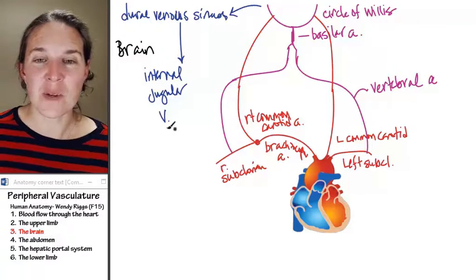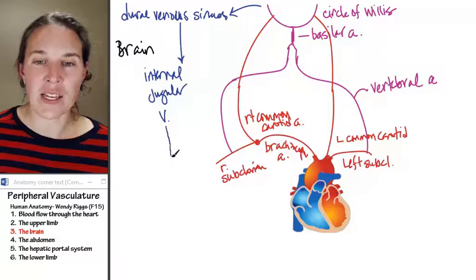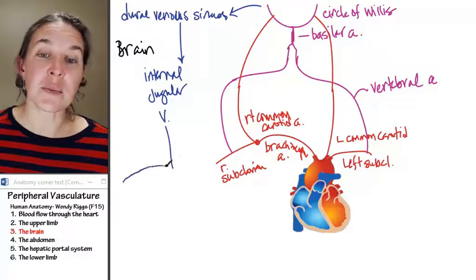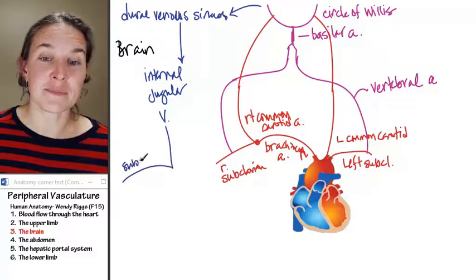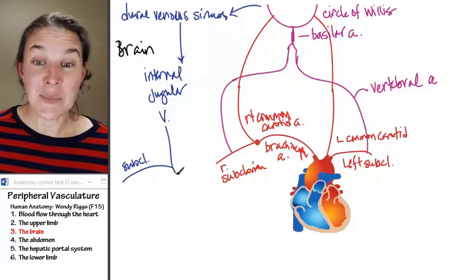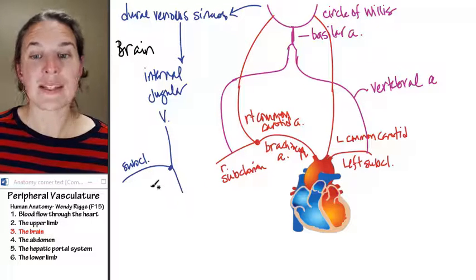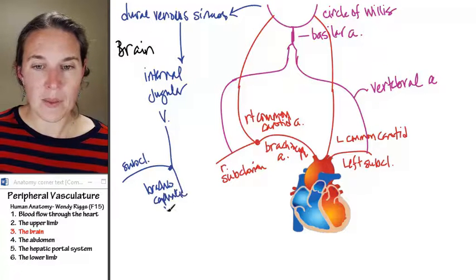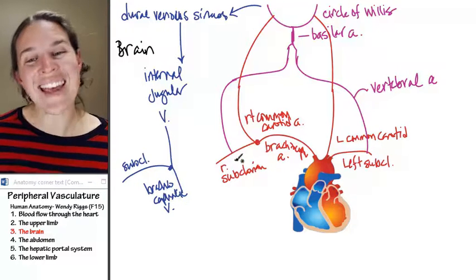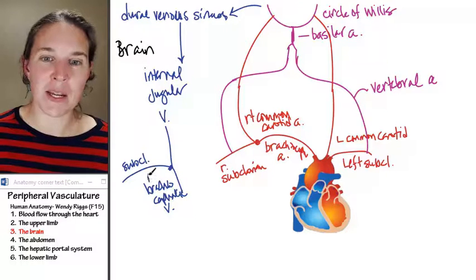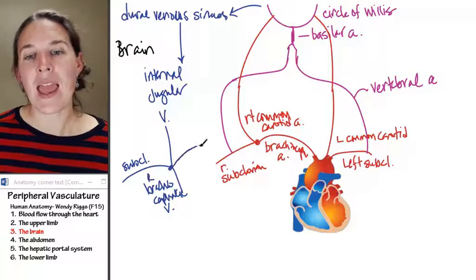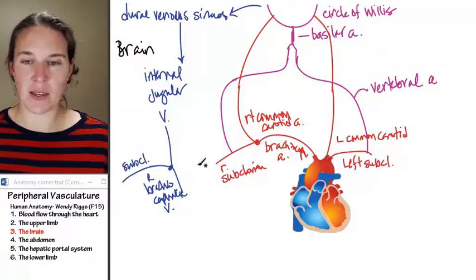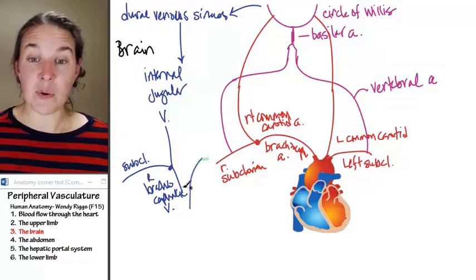So I'm going to just draw my internal jugular vein. It joins with subclavian vein to become who? Brachiocephalic. The brachiocephalic vein—so this would be my right brachiocephalic. And excuse me, not like that.